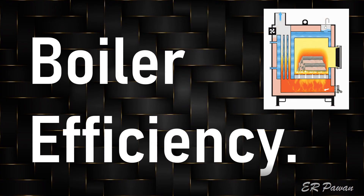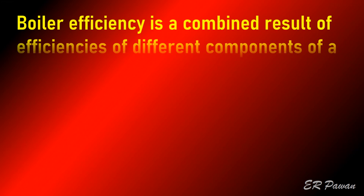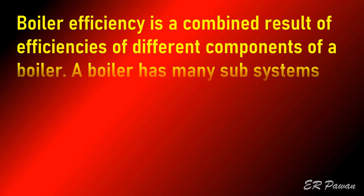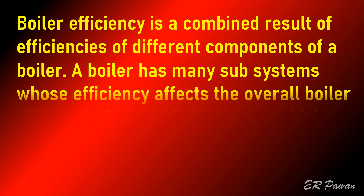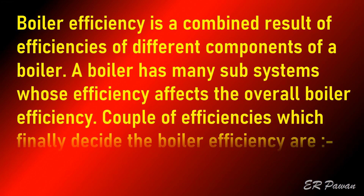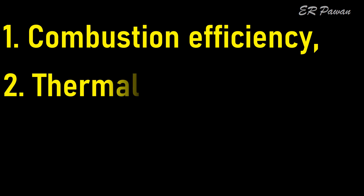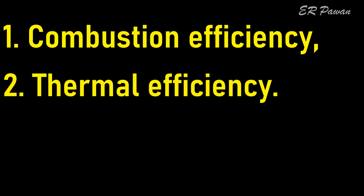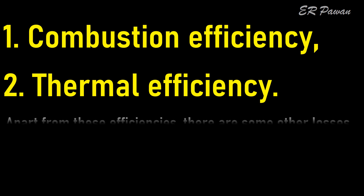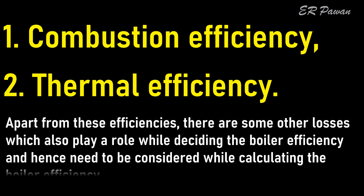Boiler efficiency is a combined result of efficiencies of different components of a boiler. A boiler has many subsystems whose efficiency affects the overall boiler efficiency. The couple of efficiencies which finally decide the boiler efficiency are: 1. Combustion efficiency, and 2. Thermal efficiency. Apart from these, there are other losses which also play a role and need to be considered while calculating boiler efficiency.